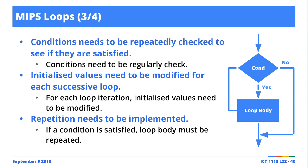In terms of MIPS, you use branch and conditional branch instructions. You have initialized values, you get into the loop body, you check if the condition is satisfied. This is a Boolean expression — BGT, BLT, BEQ, BNE — an expression that must evaluate to true or false. If it evaluates to true, you execute the loop body. If it evaluates to false, you don't execute the loop body; you jump to the next instruction that needs to be executed.